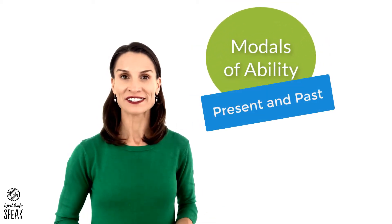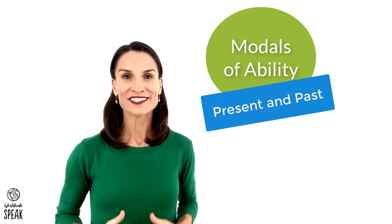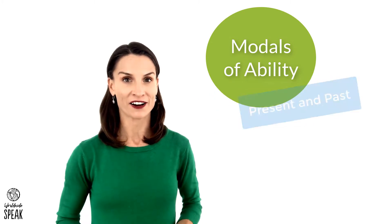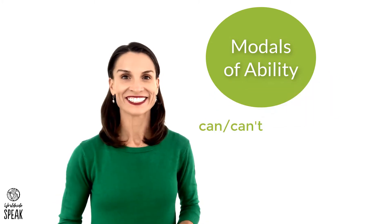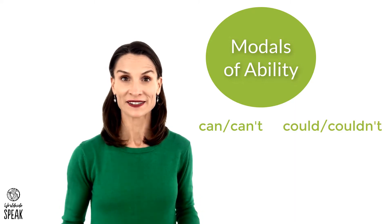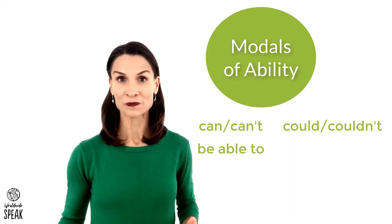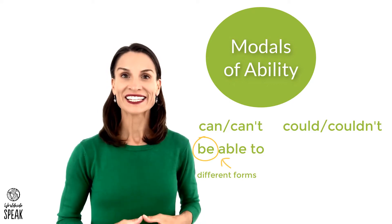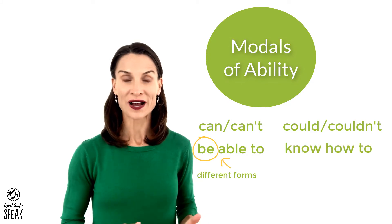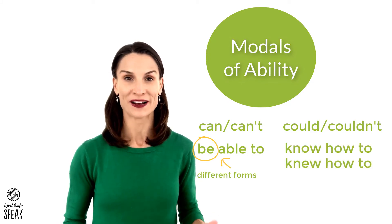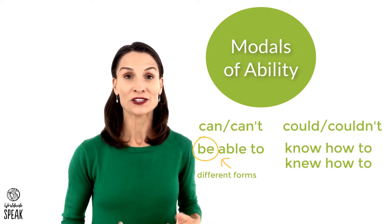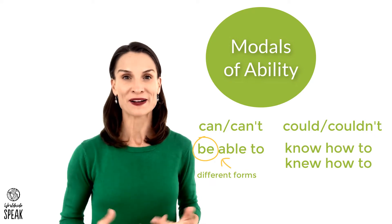Let's talk about modals of ability in the present and the past. Different modals that we have to talk about ability are can and can't, could and couldn't, be able to with all of the present and past forms of the verb be, and in some cases know how to or in the past knew how to. I'm going to show you how each of these works so that you can use them correctly to talk about abilities.